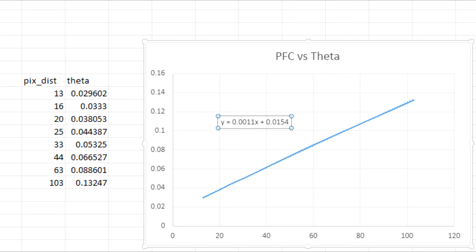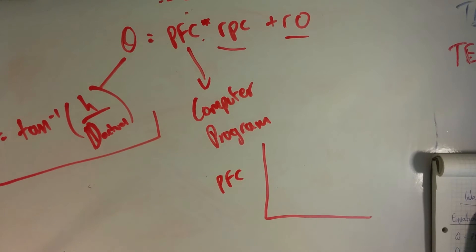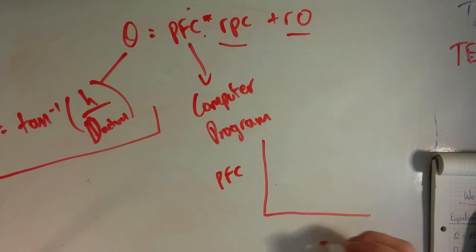I graphed pfc here and then down here I graphed theta, and the line looks like this.